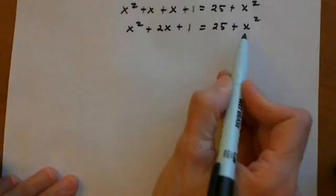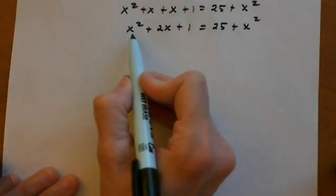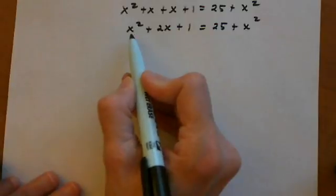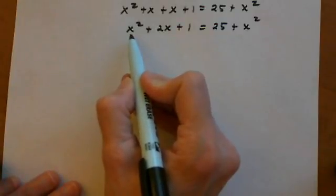Now that everything's simplified, we see we have an x². That suggests we'll probably use our quadratic equation approach. The method we're learning right now is to solve by factoring.